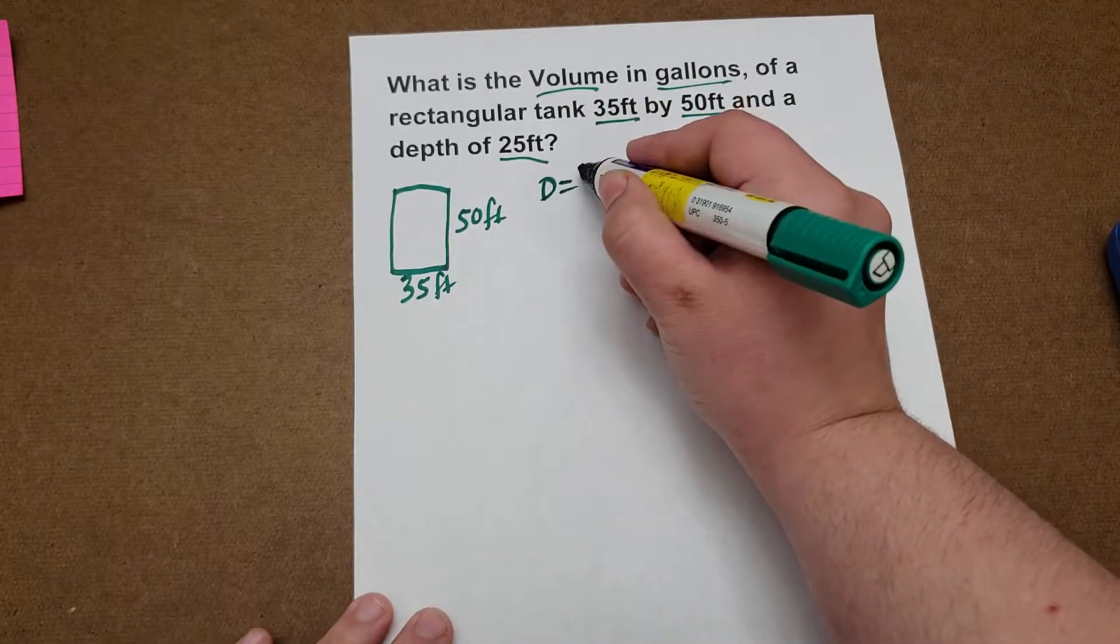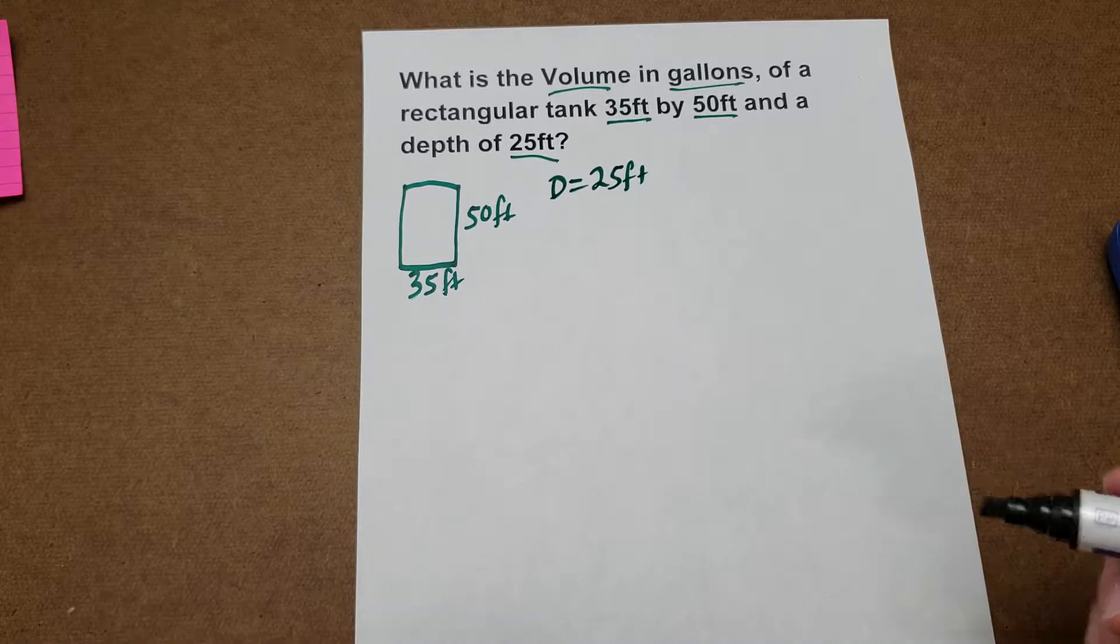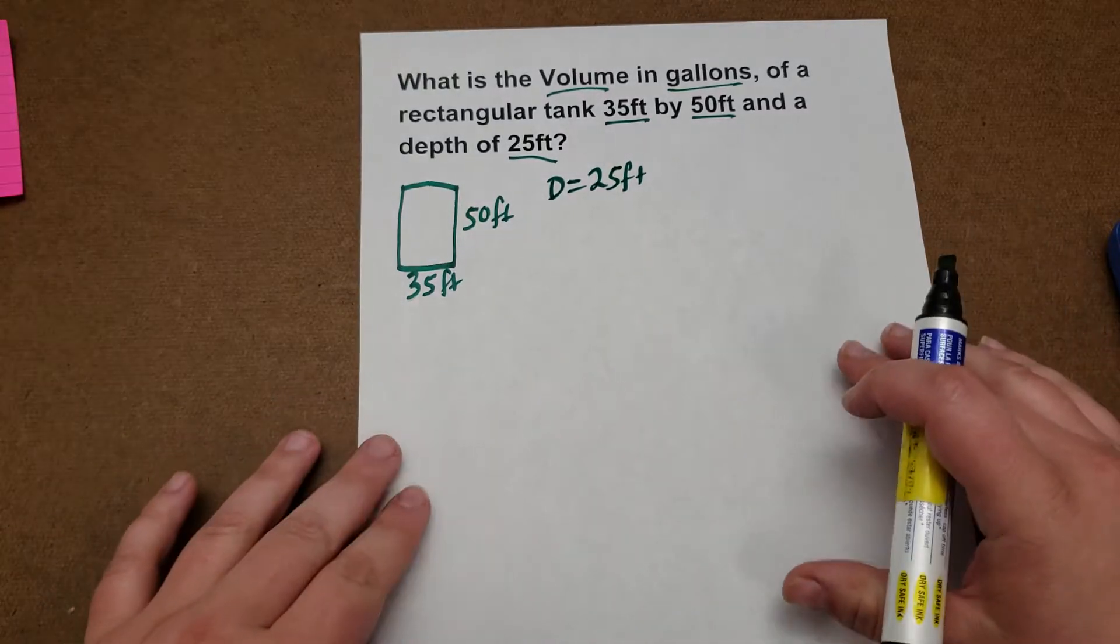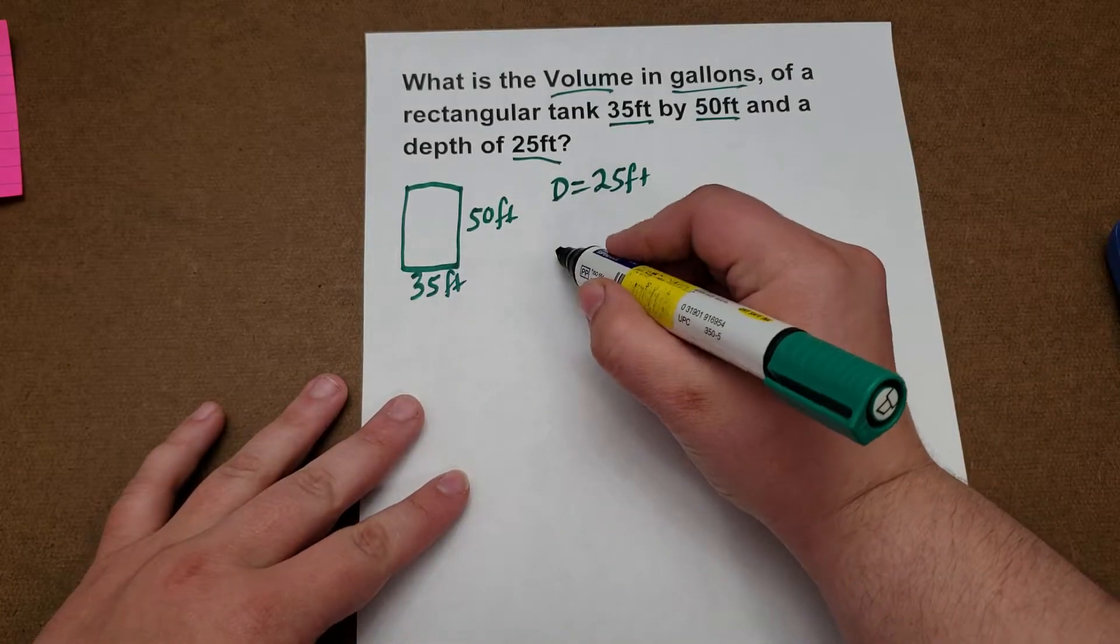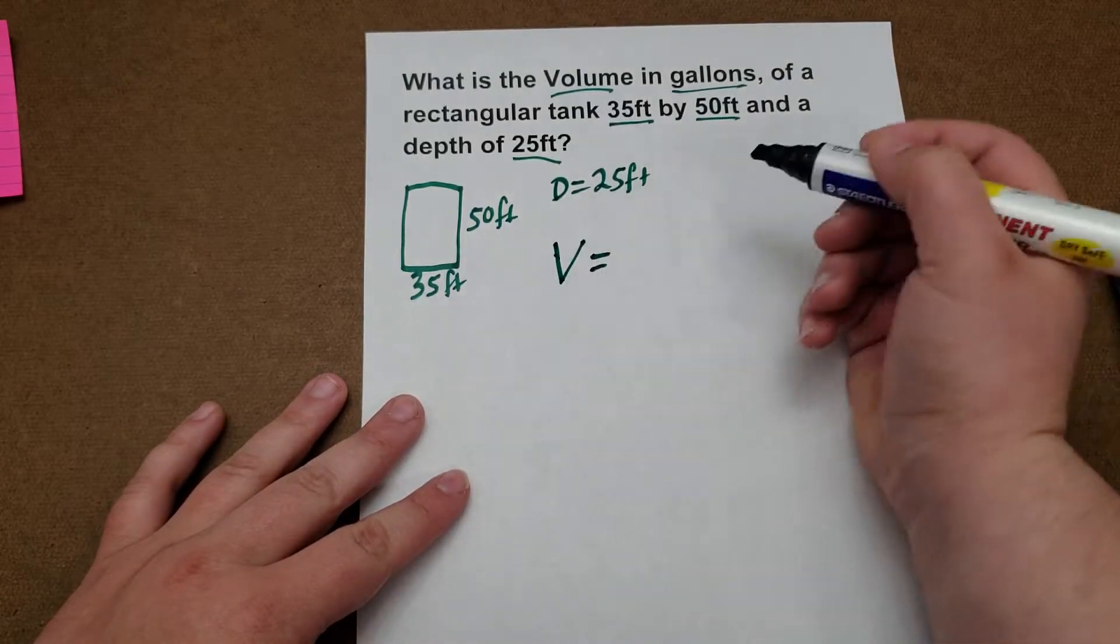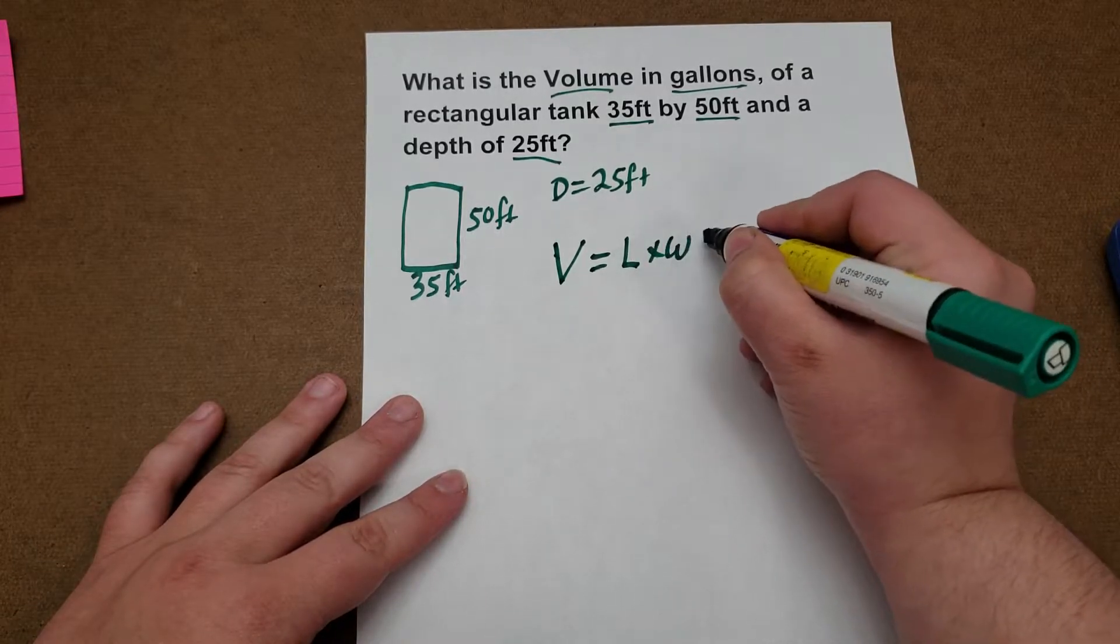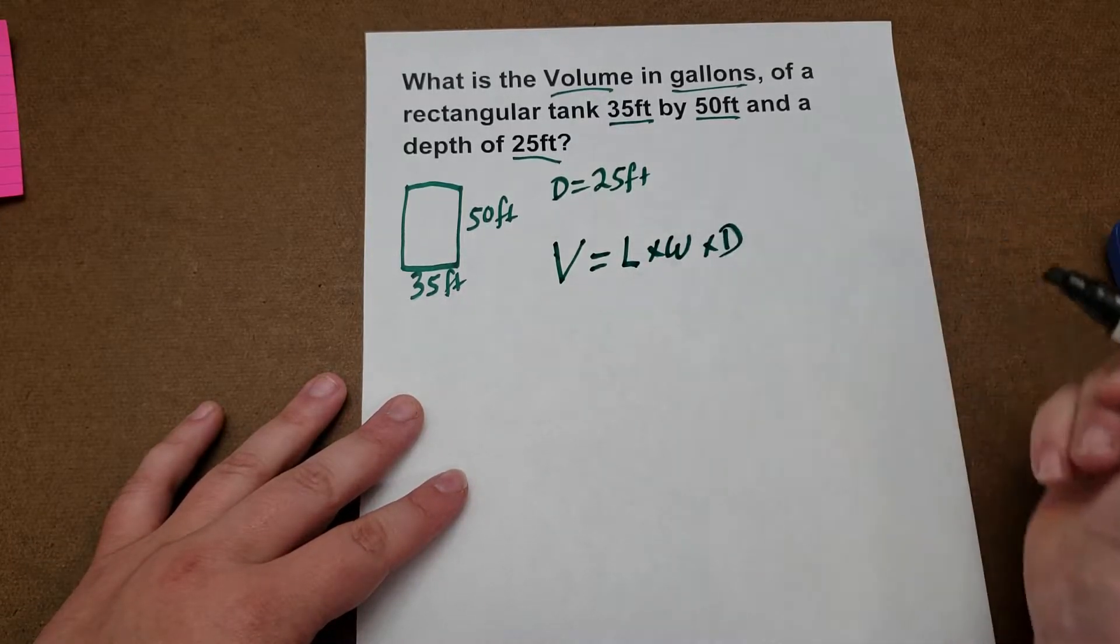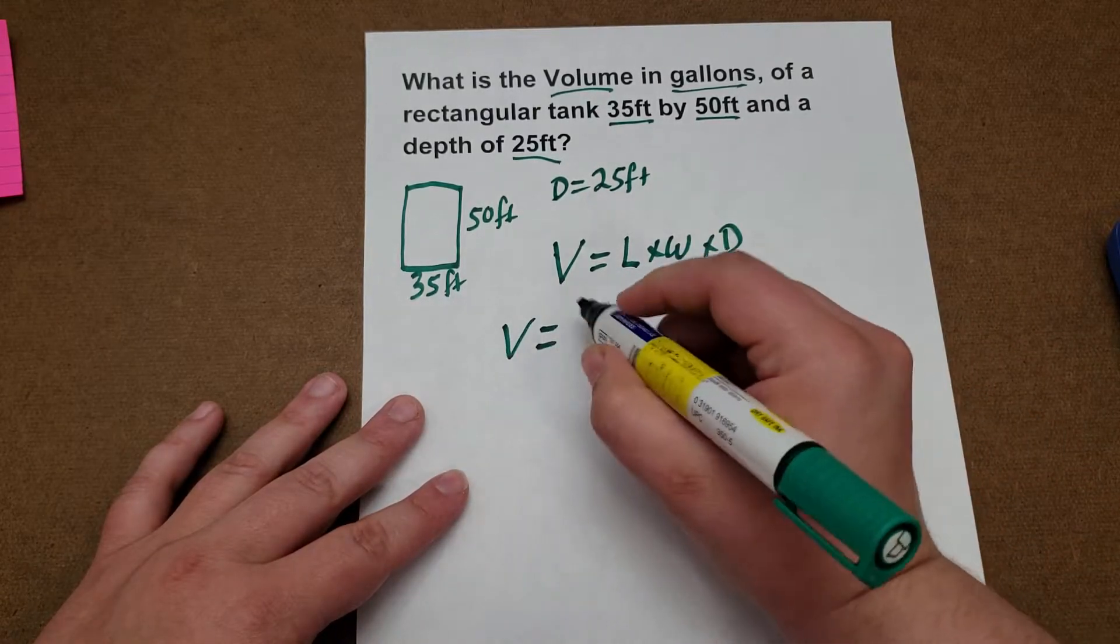Let's use D equals 25 feet. Alright, so first we'll find the volume in cubic feet since they give us units in feet anyway. So volume is equal to length times width times depth.